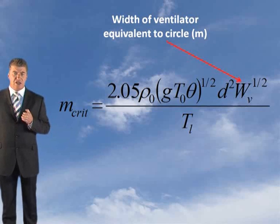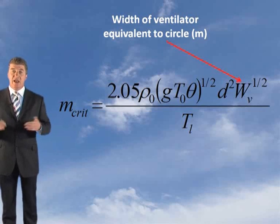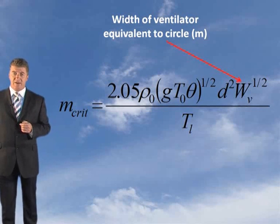WV is the width of a circular ventilator with the same area as any other vent. Because you're not sure what size vent, what shape you're going to have, you have to convert it to a circular ventilator to make this formula work. That's what WV is.